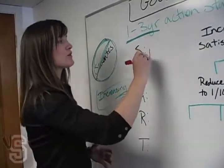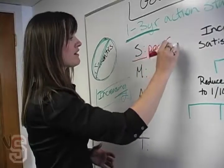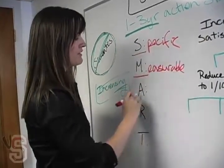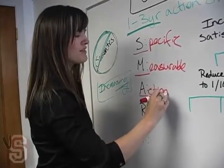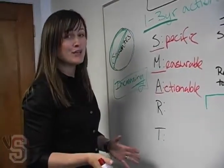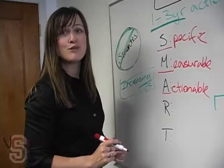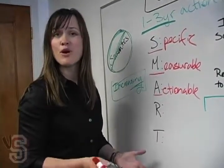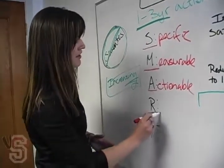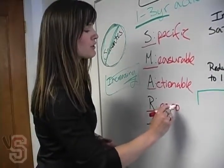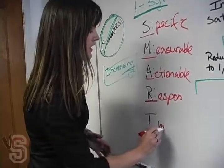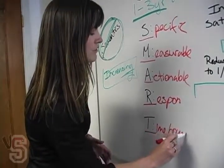The S stands for specific. M, measurable. Actionable. What does actionable mean? That means when you read it in a year from now, you remember what you wrote and you can do something about it. Trust me, I've seen a lot of plans and we often forget what we intended when we wrote the statement. Responsible person, who is doing it. And then the T is for time bound. When is it going to get done?